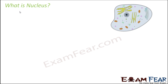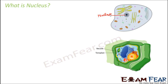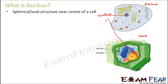So what is nucleus? If you look at a cell, you will always be able to notice a structure which is somewhat spherical and located towards the centre of the cell. That structure is nothing but the nucleus. The nucleus is present in both animal cells as well as plant cells, and here you can see the prominent spherical structure which is the nucleus.